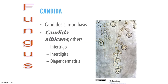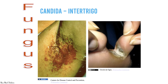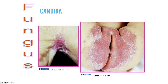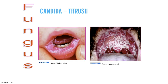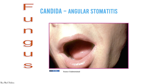Candidiasis (moniliasis) is one of the most common fungal infections, caused by Candida albicans. It also causes intertrigo, interdigital infection, and diaper dermatitis. It can occur in the axilla or between the feet, especially in diabetic patients. Candida can also occur in the oral cavity as thrush, causing angular stomatitis.